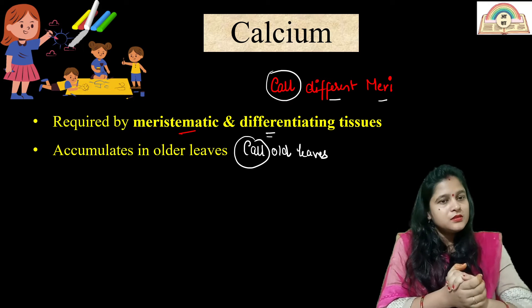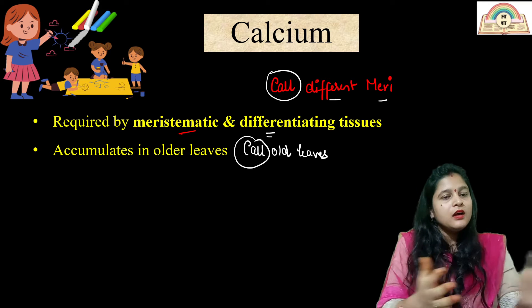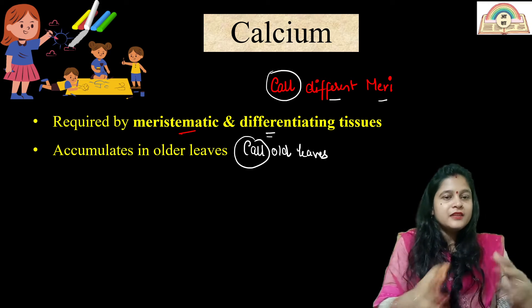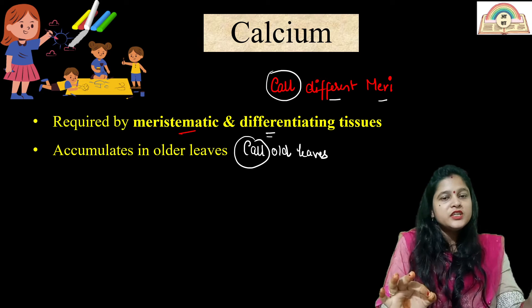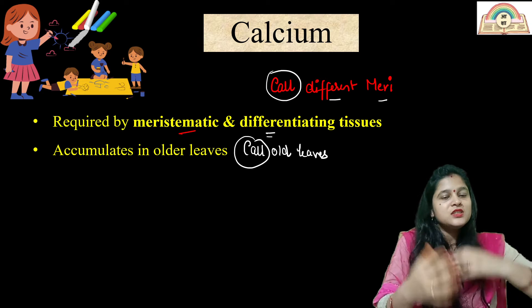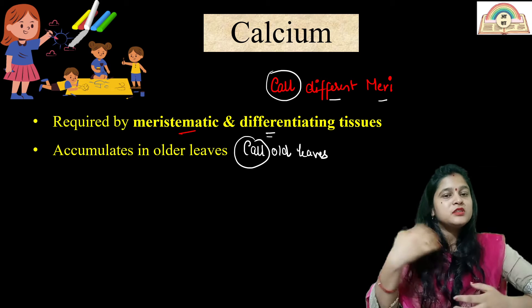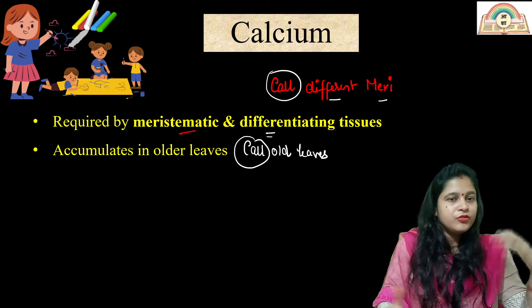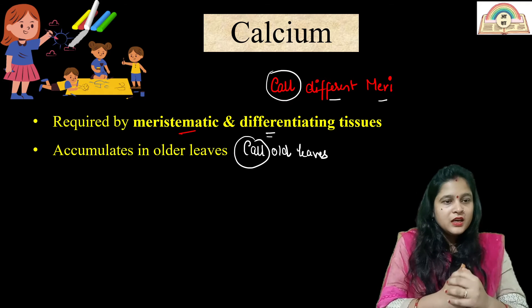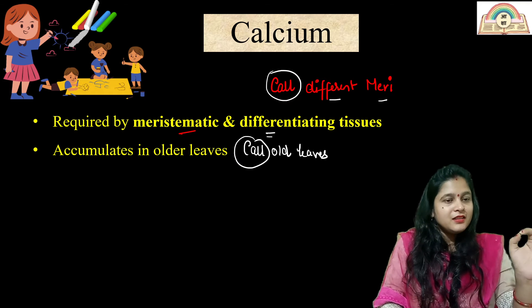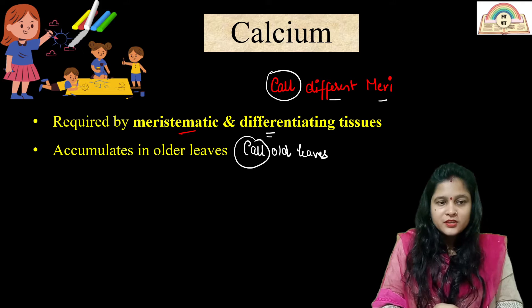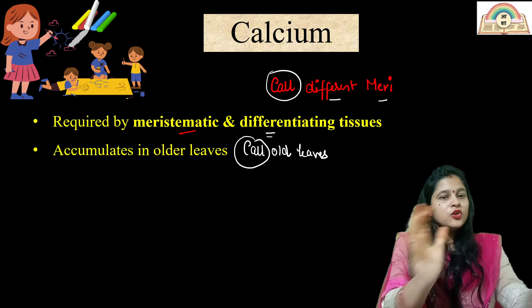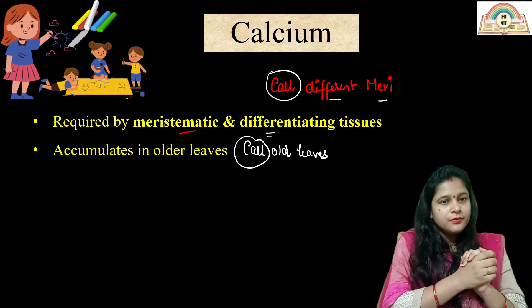Meristematic means the area in which active cell division is taking place in the plant, and differentiating means the area in which cells are becoming specialized for different functions. Second, calcium accumulates in the old leaves — the leaves which are older accumulate calcium.